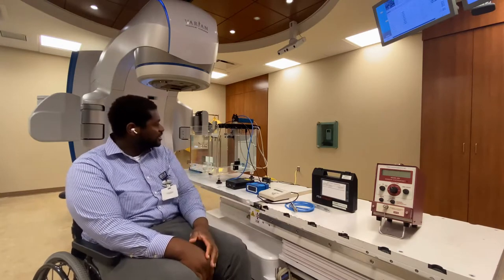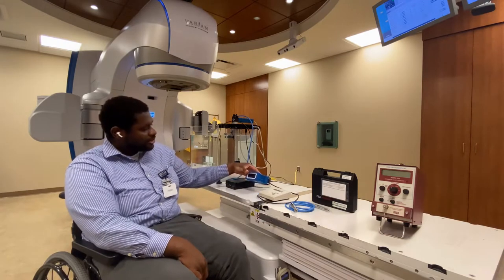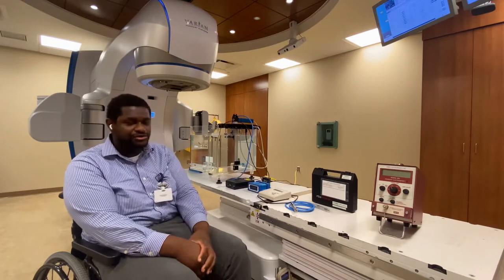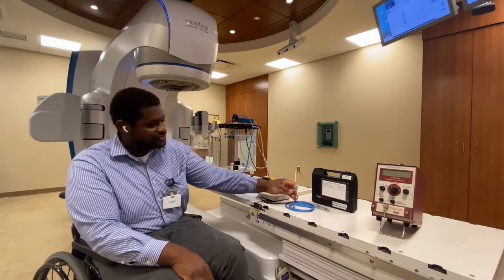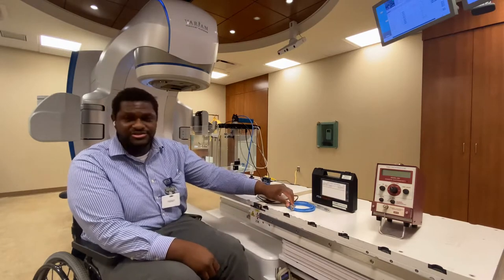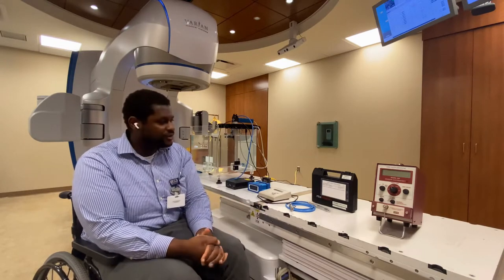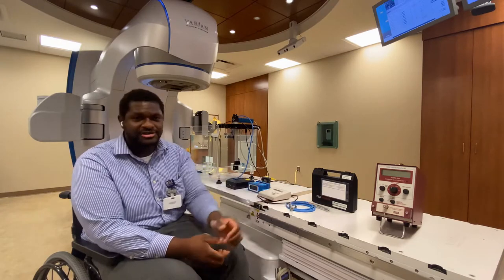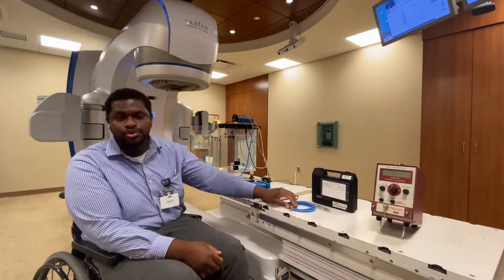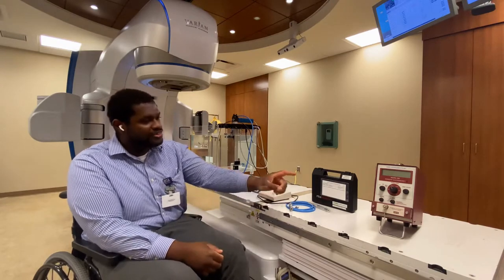So this is the equipment that we're going to be using. We have our IBA tank which is currently filled with water. We have our barometer which also will be measuring our temperature and pressure for our temperature and pressure correction factors. We have our TG51 ionization chamber which is an N313 chamber, 0.6 cc's, and we also have our electrometer here. Now one thing to note, if your electrometer and your ion chamber are sent out as a unit, your P elect will be one. If not, then essentially you'll be using the P elect that is listed on your electrometer.